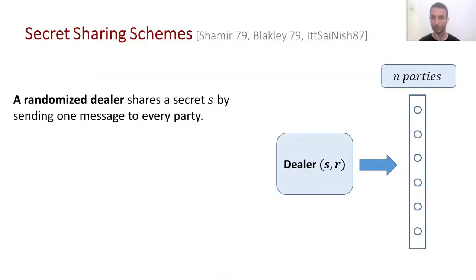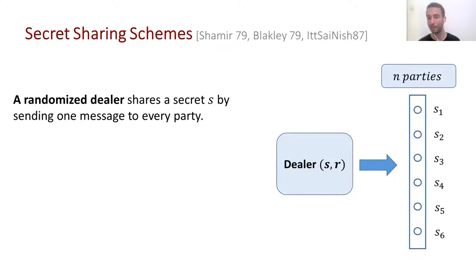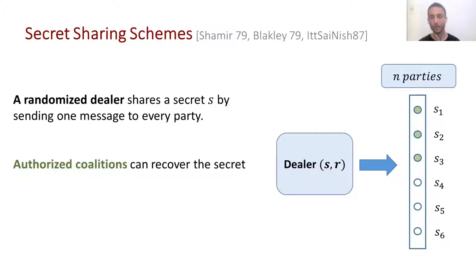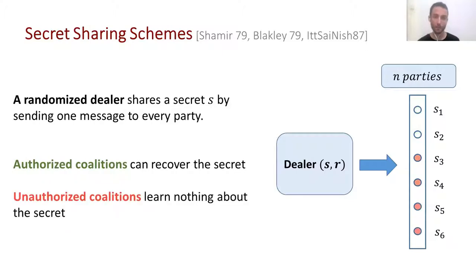So to begin with, let's introduce the concept. What is a secret sharing scheme? We have a randomized dealer which holds some secret S and it wants to share it with n parties. It sends one message to each party. Here in the example we have six parties. We want that every authorized coalition will be able to recover the secret the dealer had from the messages it received.